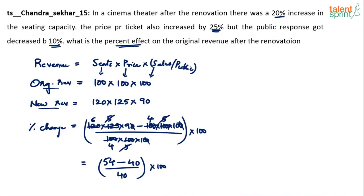So we get 14 by 40, which is 35%. Since the answer is positive, we can say the revenue increased by 35%. But wait — do we really have to include seats in this calculation?